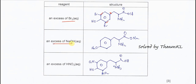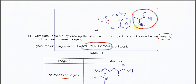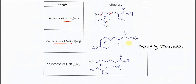The first reagent is bromine water. With phenol, the phenol directs bromination to the 2, 4, and 6 positions. Since position 4 is blocked, two bromine atoms substitute the hydrogens at positions 2 and 6 to give the dibrominated product.